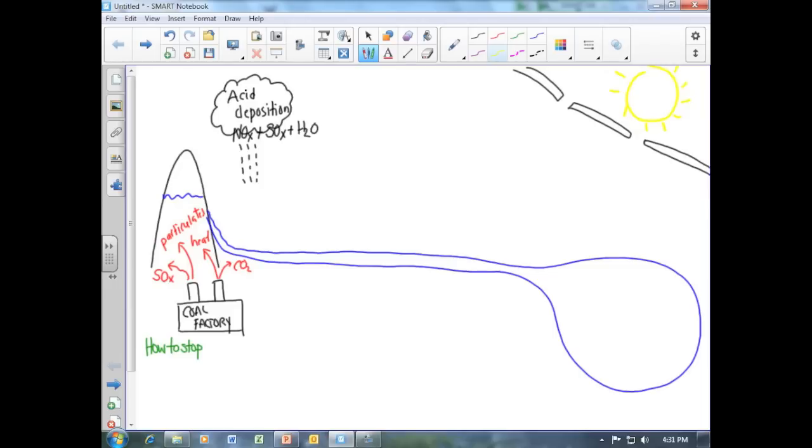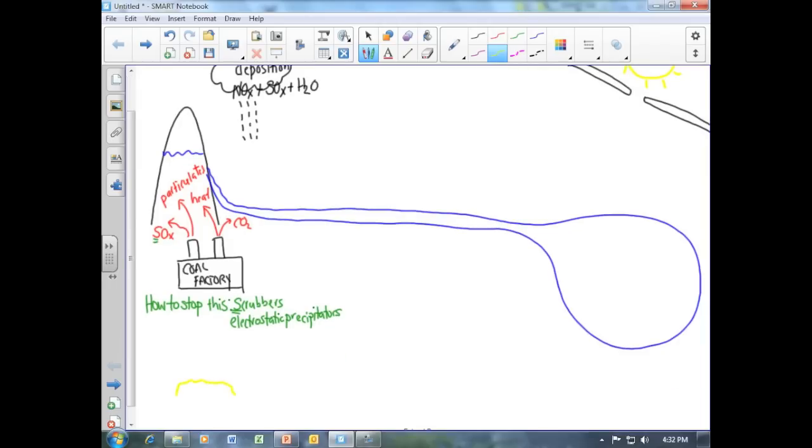Because these emissions contribute to wet and dry deposition, we can reduce them by burning low sulfur coal or installing scrubbers as well as electrostatic precipitators. To remember that scrubbers reduce the amount of sulfur released, remember they both start with S. Electrostatic precipitators will reduce the amount of particulates released. The sulfur that is removed by scrubbers can be collected and later used for other industrial processes.